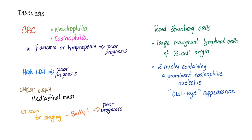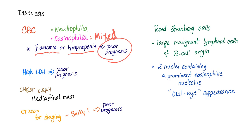To diagnose Hodgkin's disease, you need a complete blood count. It will show neutrophilia and eosinophilia, especially with the mixed cellularity subtype of Hodgkin's disease. If you have anemia — which will be normocytic normochromic — or lymphopenia, you will have a poor prognosis. High LDH in the blood also indicates a poor prognosis.